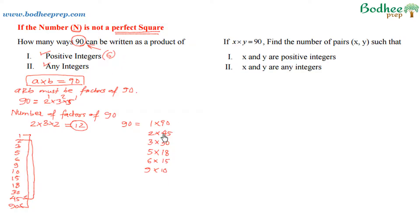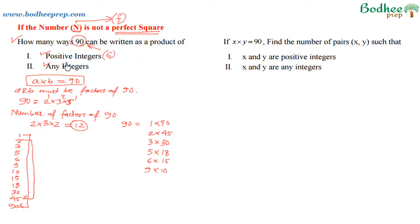So the answer for the first part of this question — how many ways can 90 be written as a product of two positive integers — is 6. Remember that positive integers are nothing but natural numbers. If we devise a shortcut formula where f is the number of factors of the given number, then the number of positive integral solutions (unordered pairs) is f divided by 2.